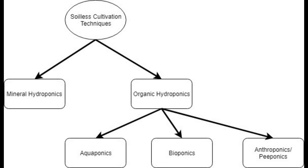Lastly, I would incorporate this more or less emerging field of anthroponics, sometimes also known as peoponics. Peoponics is really a subset of the wider anthroponics. Anthroponics, of course, means that nutrients are derived from human waste.